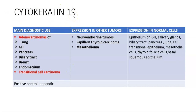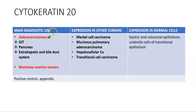Cytokeratin 19's main diagnostic use is adenocarcinomas of lung, GIT, pancreas, biliary tract, breast, and endometrium; transitional cell carcinoma is also positive. It is also expressed in neuroendocrine tumors, papillary thyroid carcinoma, and mesothelioma. Cytokeratin 20's main diagnostic use is adenocarcinomas of the GIT, particularly colorectal carcinomas, as well as pancreatic adenocarcinoma and extrahepatic bile duct system carcinomas. Another important tumor is mucinous ovarian tumors, which are positive for CK20. It is also expressed in Merkel cell carcinoma, mucinous pulmonary adenocarcinomas, hepatocellular carcinomas, and transitional cell carcinomas.